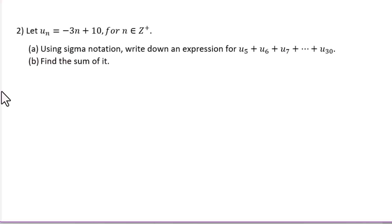Second question: let u sub n equals negative 3n plus 10 for n in the natural numbers. Use sigma notation to write down an expression for u sub 5 plus u sub 6 through u sub 30. Summation of negative 3n plus 10 as n goes from 5 to 30.